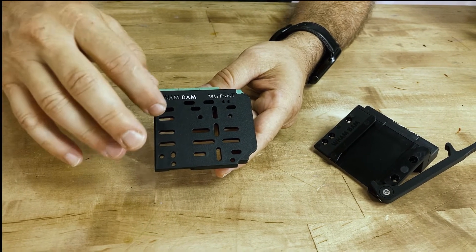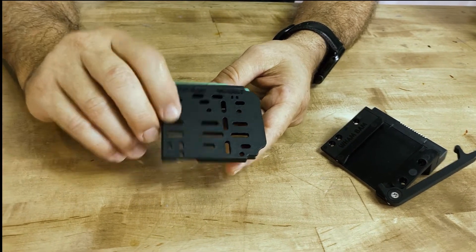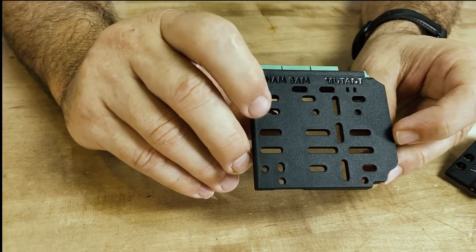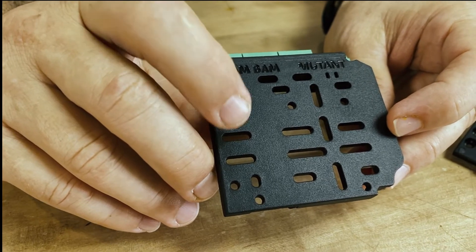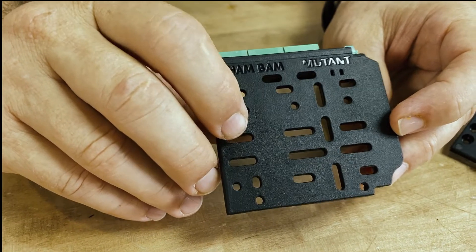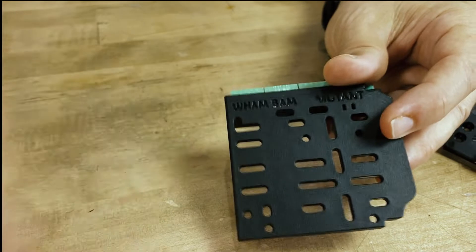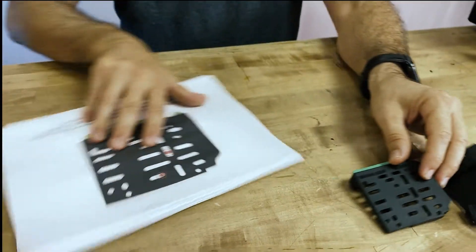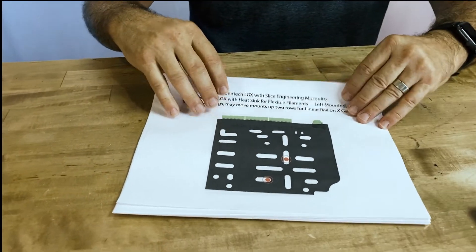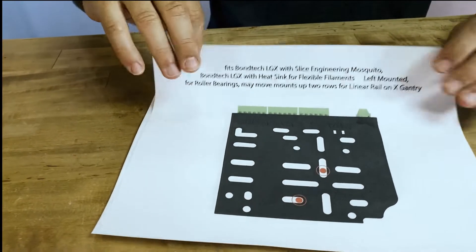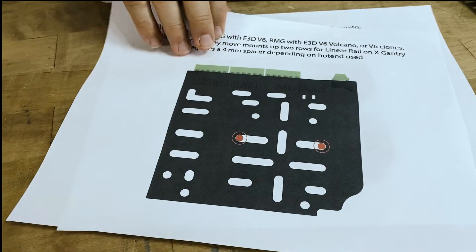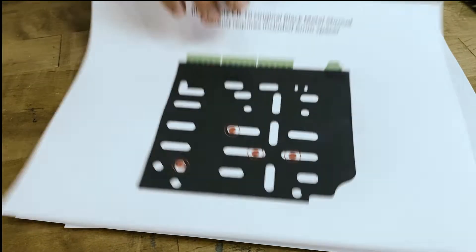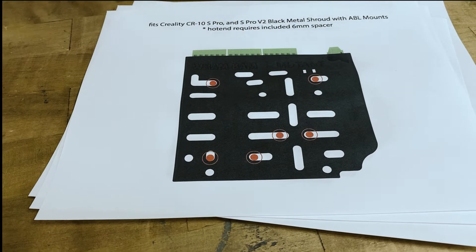You'll also notice that instead of the old hole pattern, we actually have slot patterns. These slot patterns allow the Mutant to mount natively to literally thousands of combinations of hot ends, direct drives, and tools. We will have guides up on our website showing all the different positions for the various hot ends and mounts.